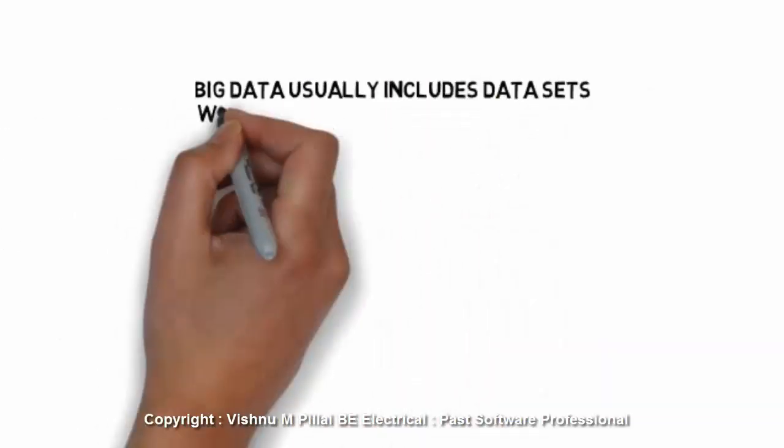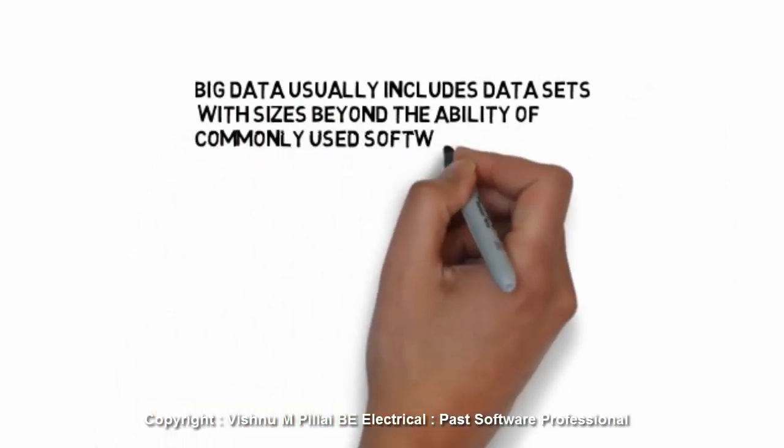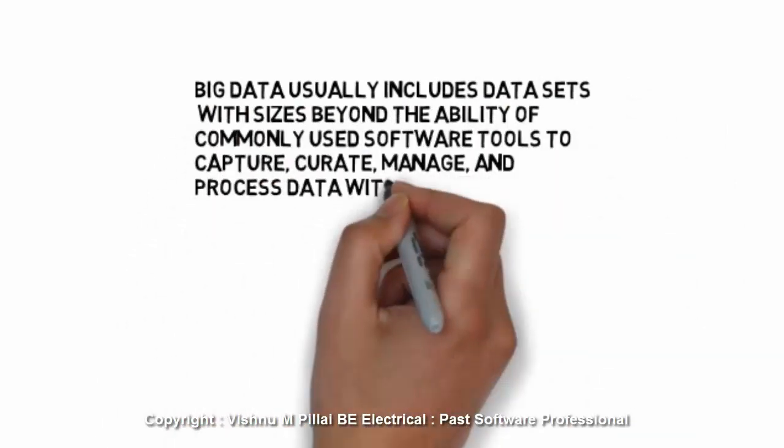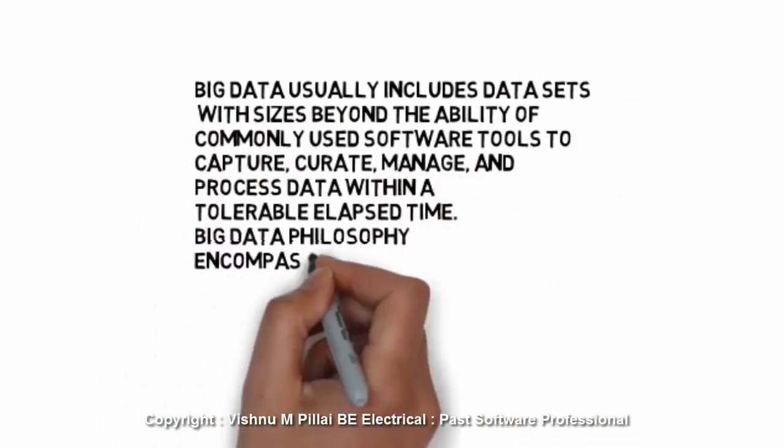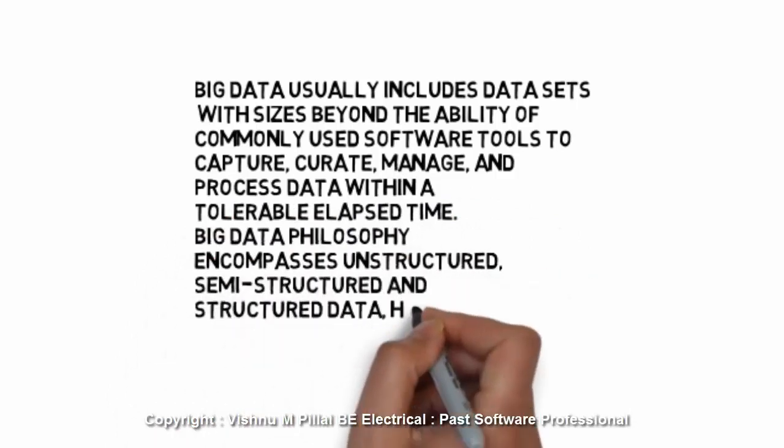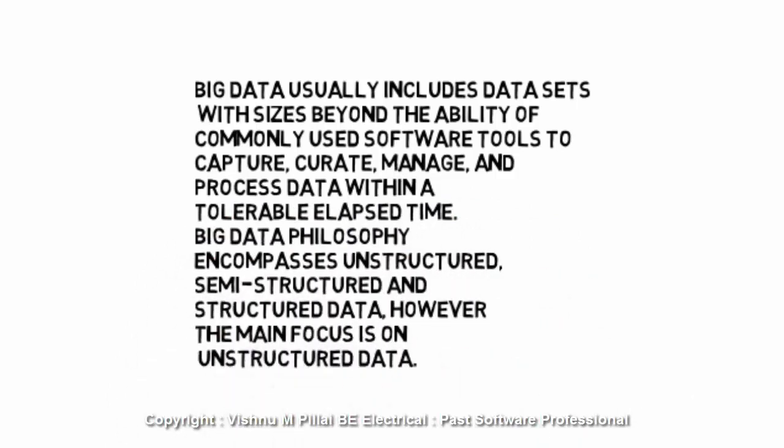Big data usually includes data sets whose size is beyond the ability of commonly used software tools to capture, curate, manage, and process data within a tolerable elapsed time. The big data philosophy encompasses unstructured, semi-structured, and structured data. However, the main focus is on unstructured data. Big data can be of three different types: unstructured data, structured data, and semi-structured data.